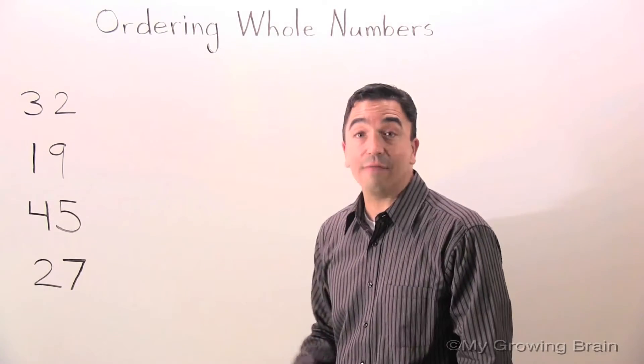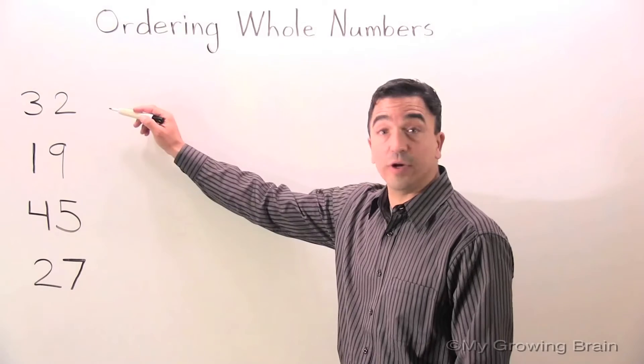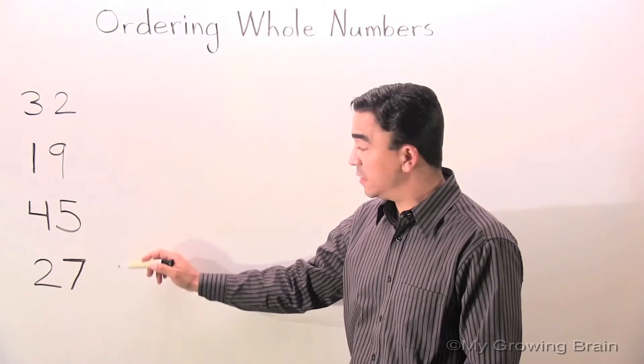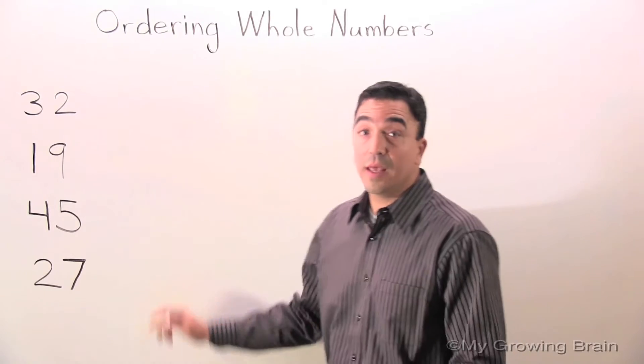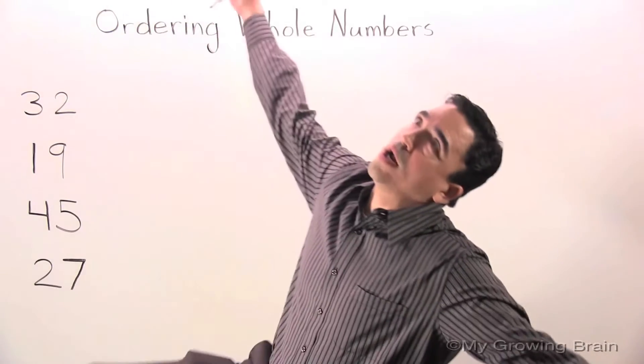On the board, I have four two-digit numbers: 32, 19, 45, and 27. I'm going to put them in order from least to greatest.